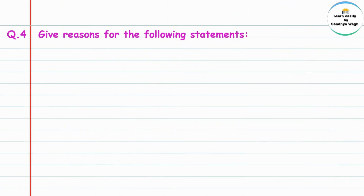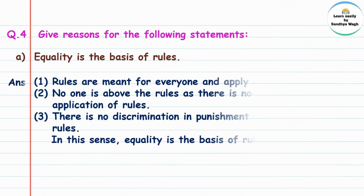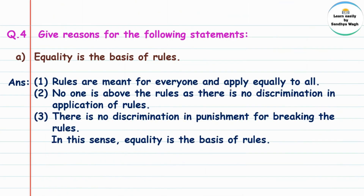Question 4: give reasons for the following statements. Equality is the basis of rules. Rules are meant for everyone and apply equally to all. No one is above the rules. As there is no discrimination in application of rules, there is no discrimination in punishment for breaking the rules. In this sense, equality is the basis of rules.